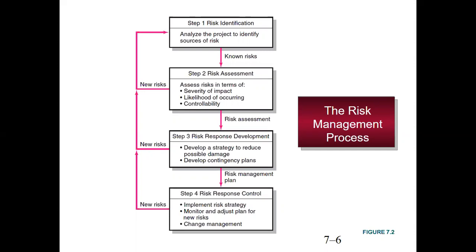The risk management process consists of four basic steps. Step one is to identify the risk. Step two is risk assessment. Step three is risk response development, and step four is risk response control.